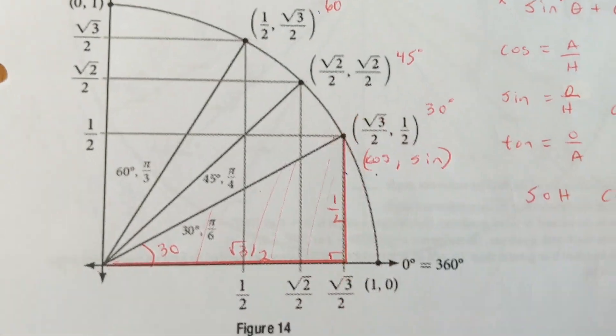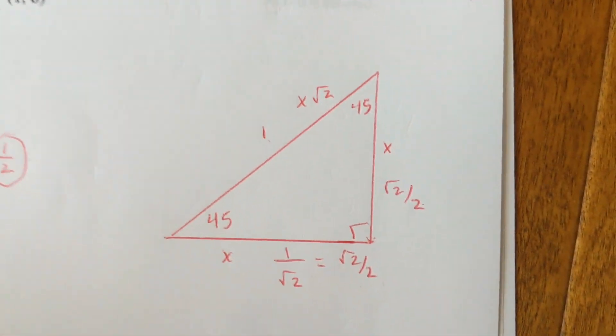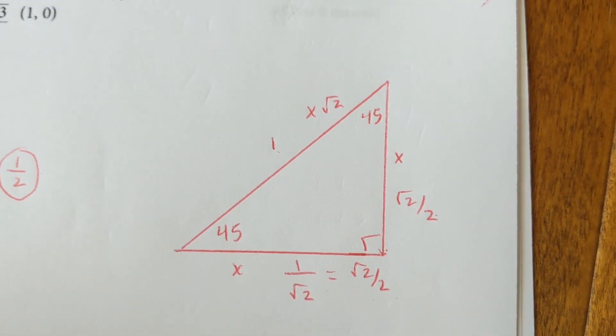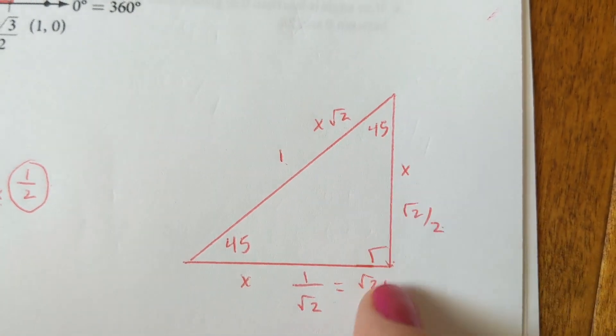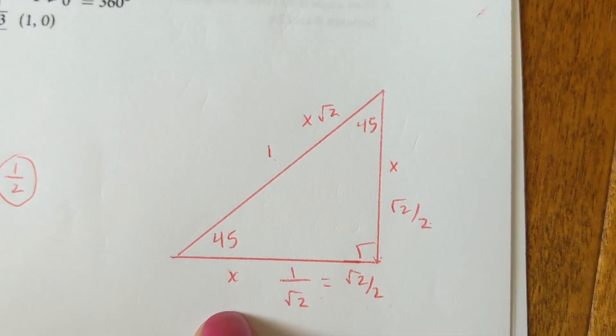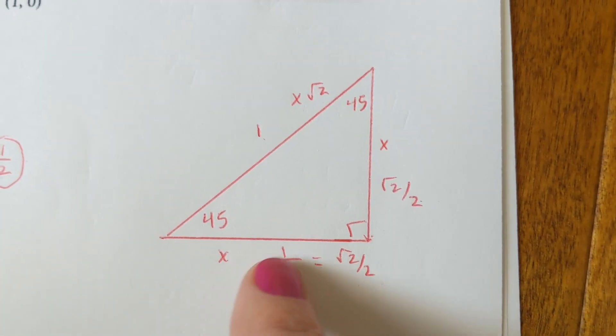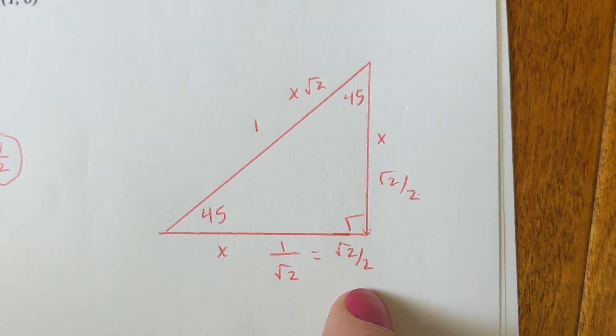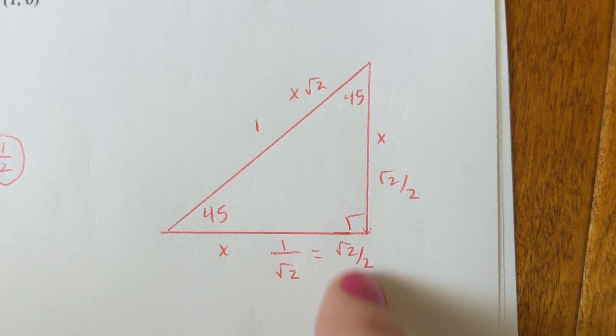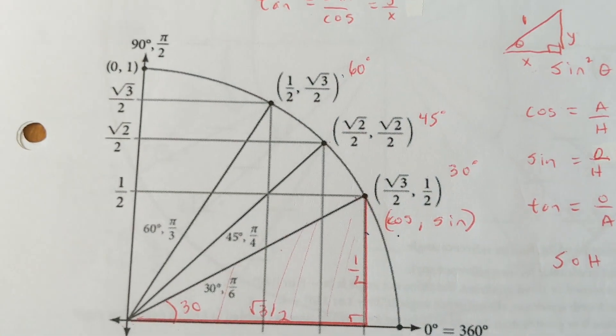And the 45-45-90 numbers come from the 45-45-90 rules. x, x, x radical 2. On a 45-45-90, the legs are equal. So going backwards from multiplying by radical 2, you've got to divide 1 by radical 2. Rationalizing it gives you radical 2 over 2.